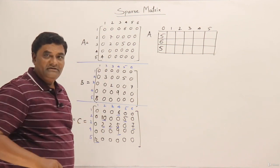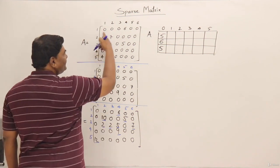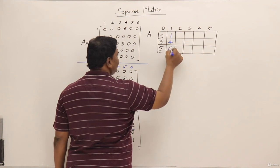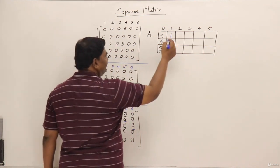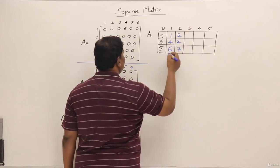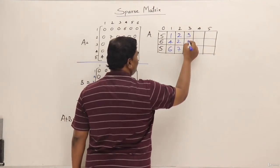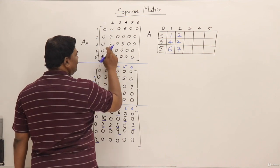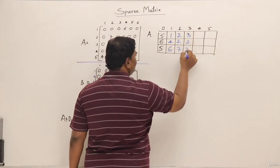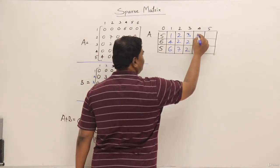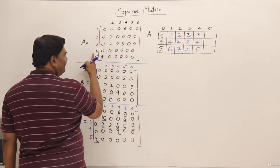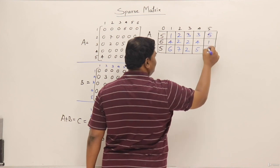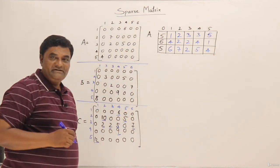Now let me fill the table with the nonzero elements. First row, fourth column, value 6. Second row, second column, value 7. Third row, second column, value 2. Third row, fourth column, value 5. Fifth row, first column, value 4. This is how matrix A is represented in coordinate list form.